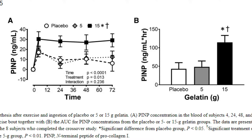Here we can see the effects of placebo, 5 grams, and 15 grams of a gelatin collagen supplement on PIMP, which is a pro-collagen blood marker used for this test. Gelatin is used here because it is very high in the amino acids shown in the prior chart, and we see a totally dose-dependent relationship between the amount of gelatin and pro-collagen seen in the blood. If you imagine whey protein as priming your muscle for growth during a workout, we can likewise look at gelatin as priming your tendon for growth or recovery.